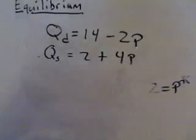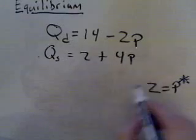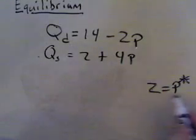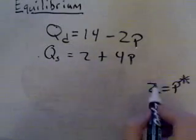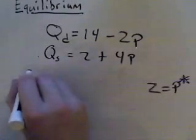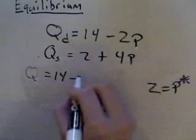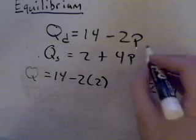What I'm going to do is I'm going to take that 2 that we got and plug it right back into either one of my starting equations. It doesn't matter which one because this price is that occurs at equilibrium, which means it's for both quantity demanded and quantity supplied. So I'm going to try plugging it in to my demand equation. So I'm going to get Q equals 14 minus 2 times 2. Plug that in for price.